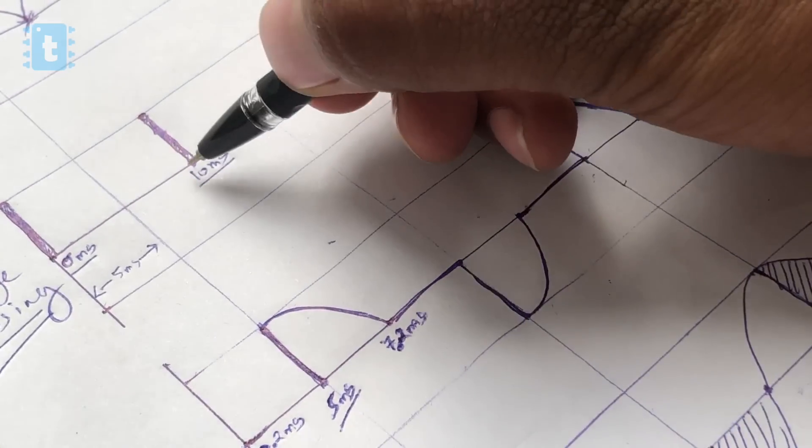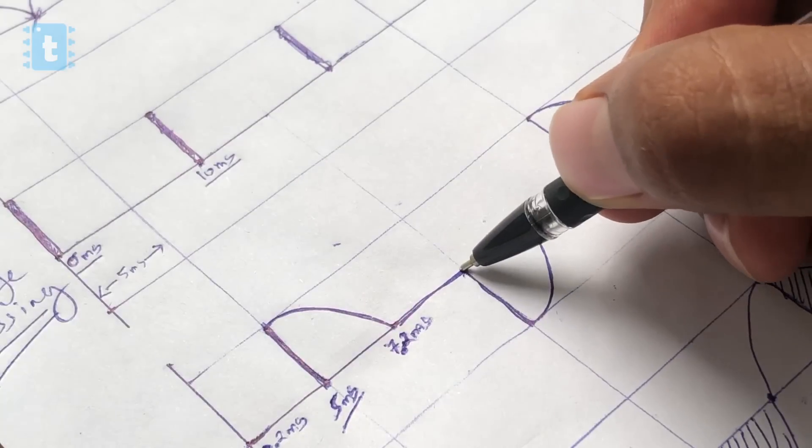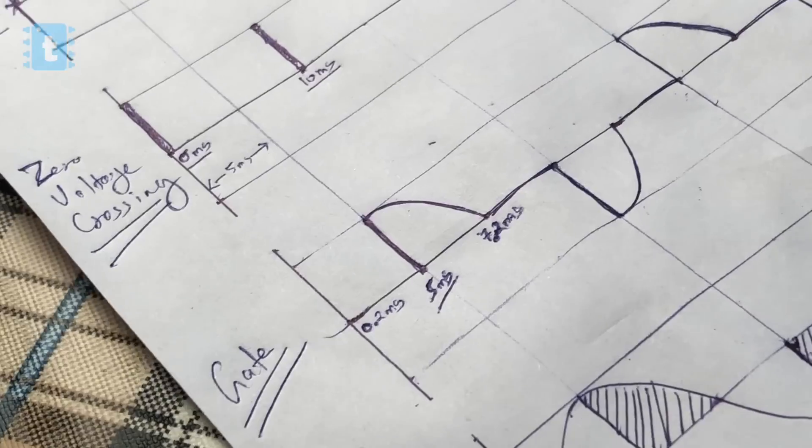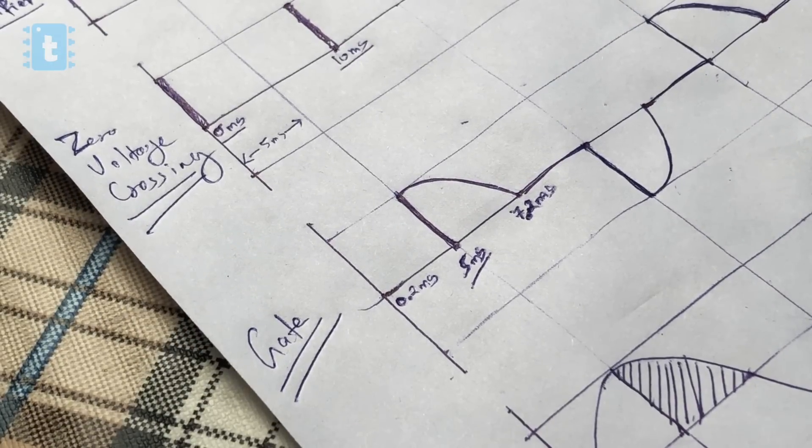So now the signal at the gate pin is something like this - after every 5 millisecond of zero crossing, the gate is turned on. And with this, the output of the TRIAC will be something like this - the power is delivered for only 5 millisecond in a half cycle which was previously 10 millisecond.